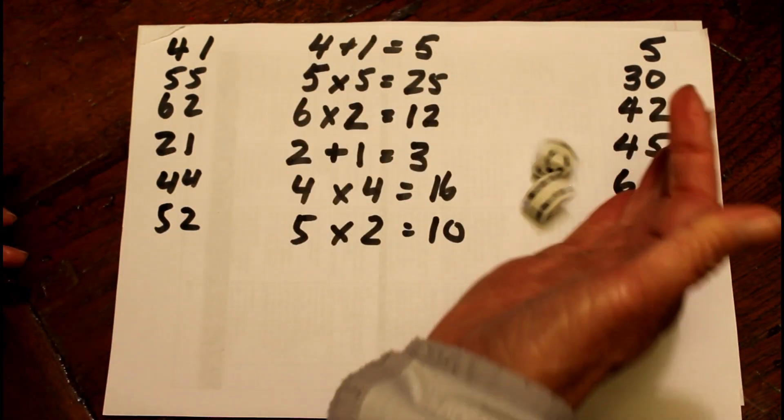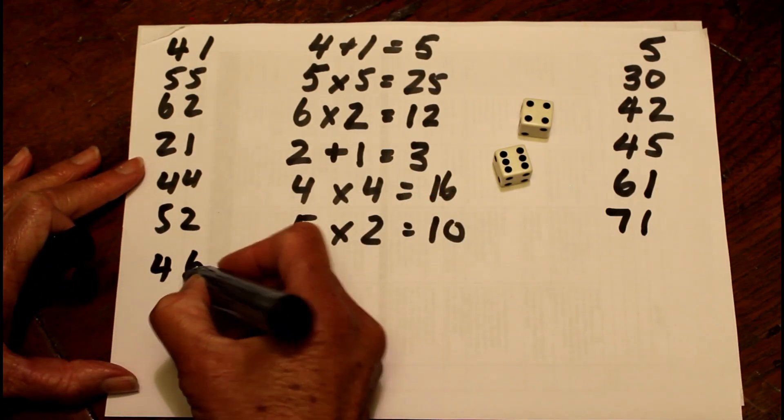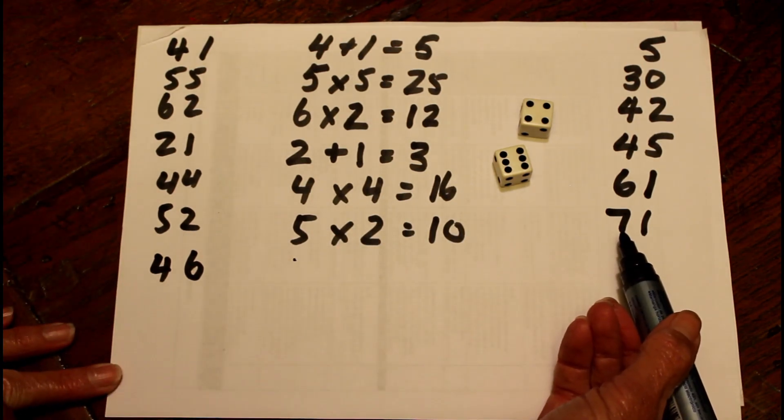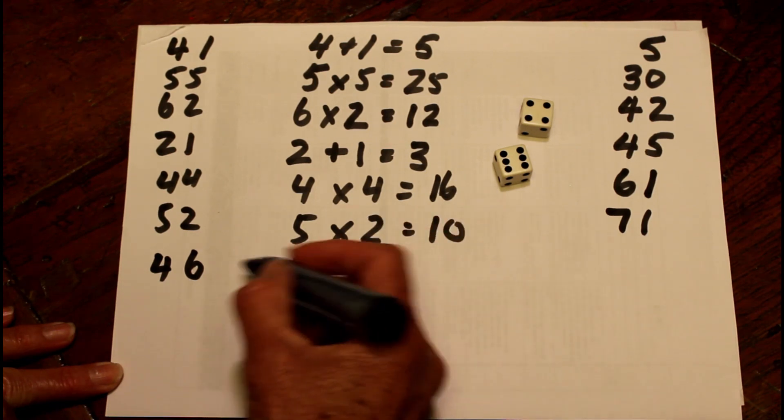I'm going to throw the dice again. I've got 4 and 6. Now I know that 6 times 4 is 24, which will put me at 95, which could be a good number.